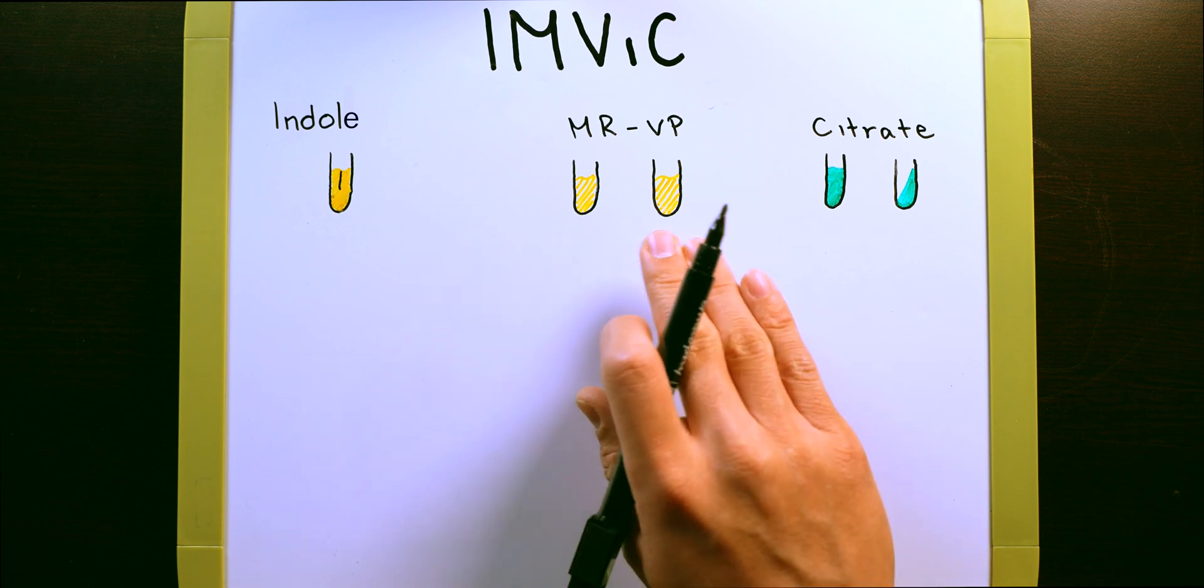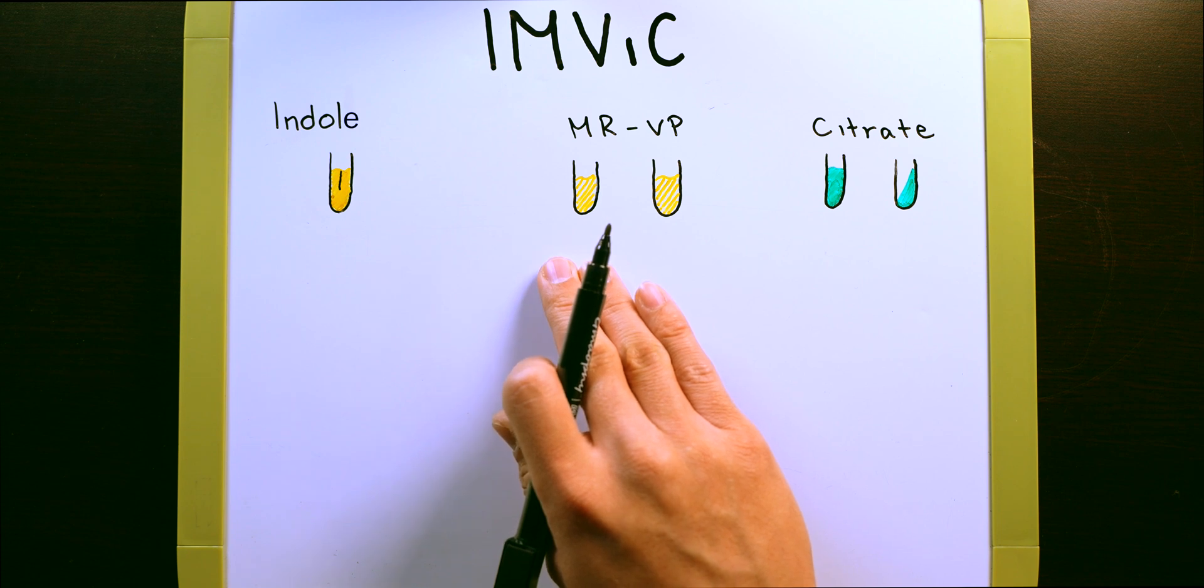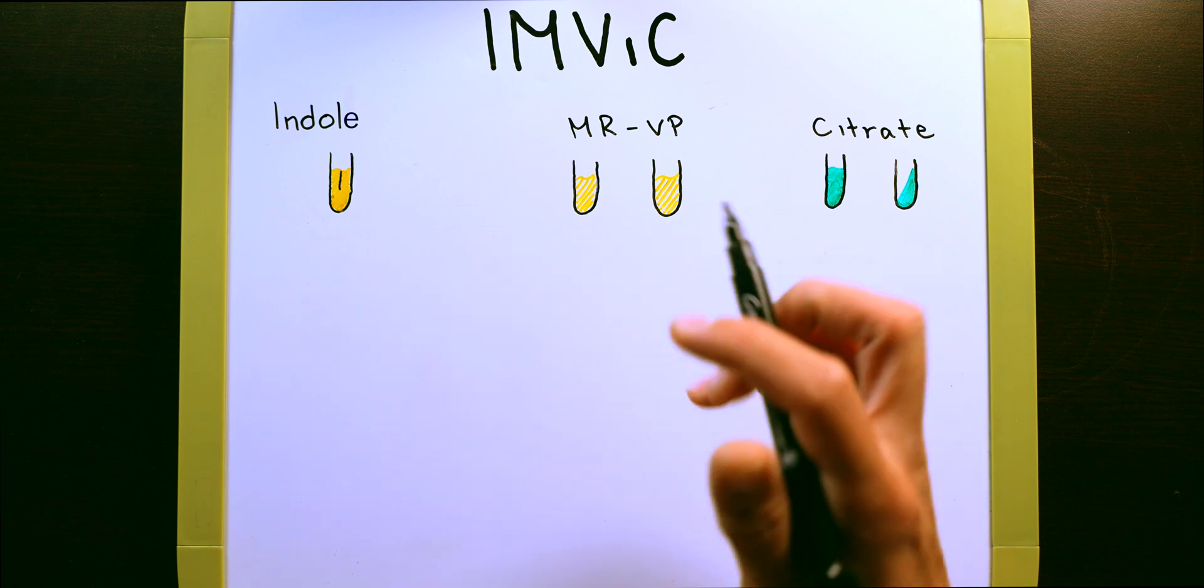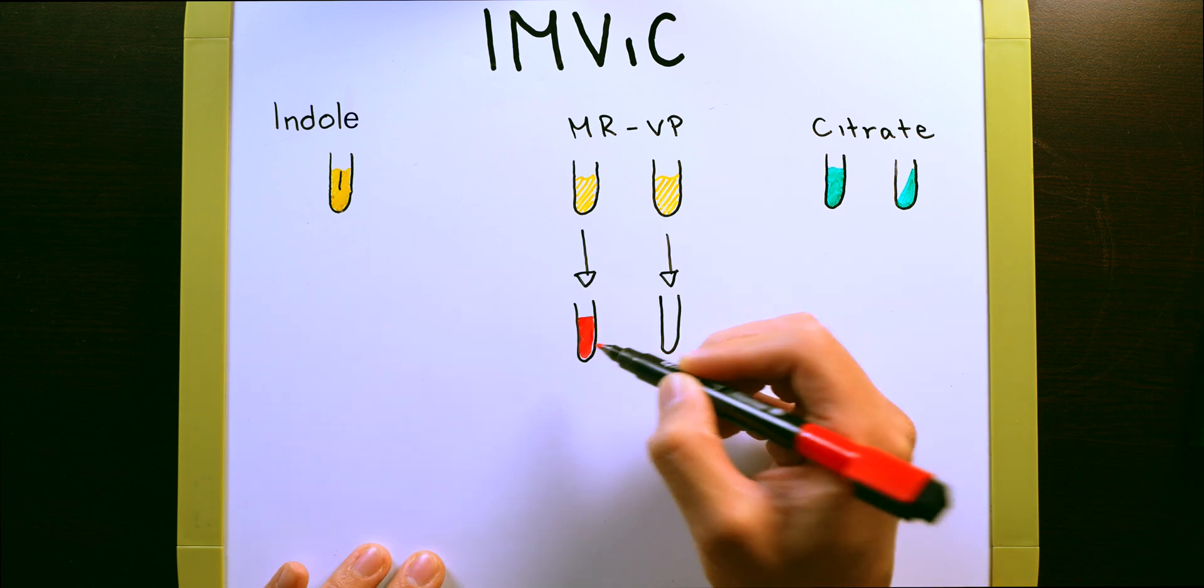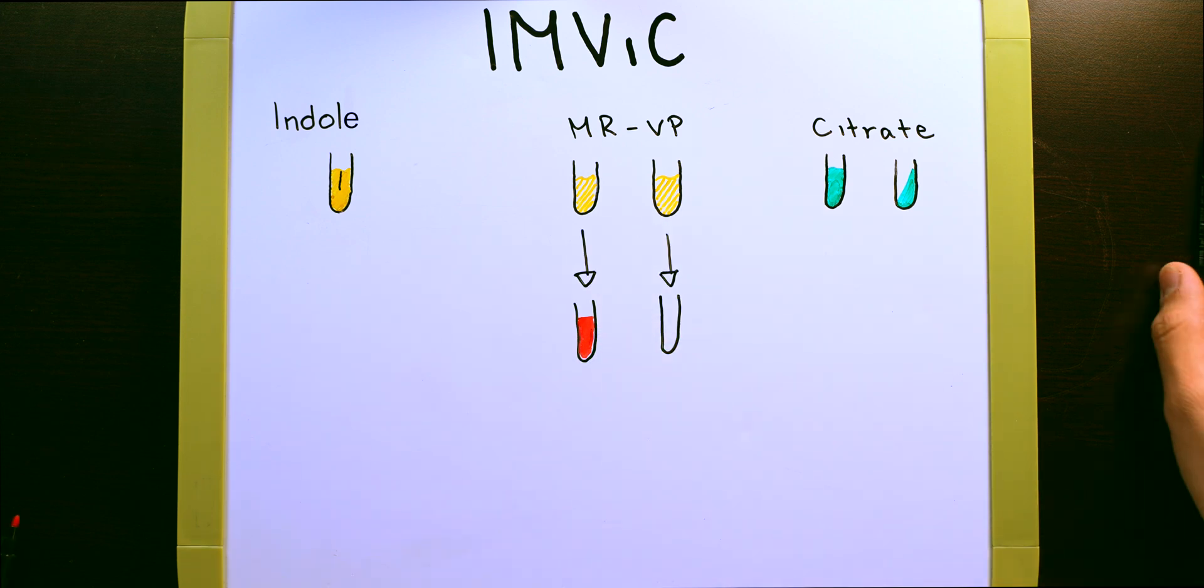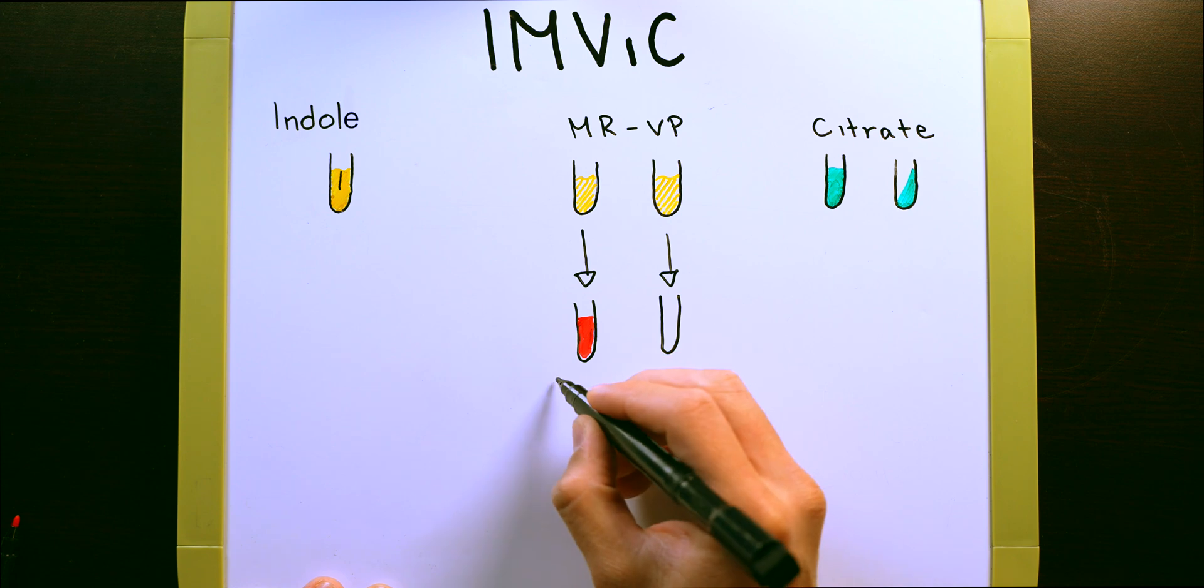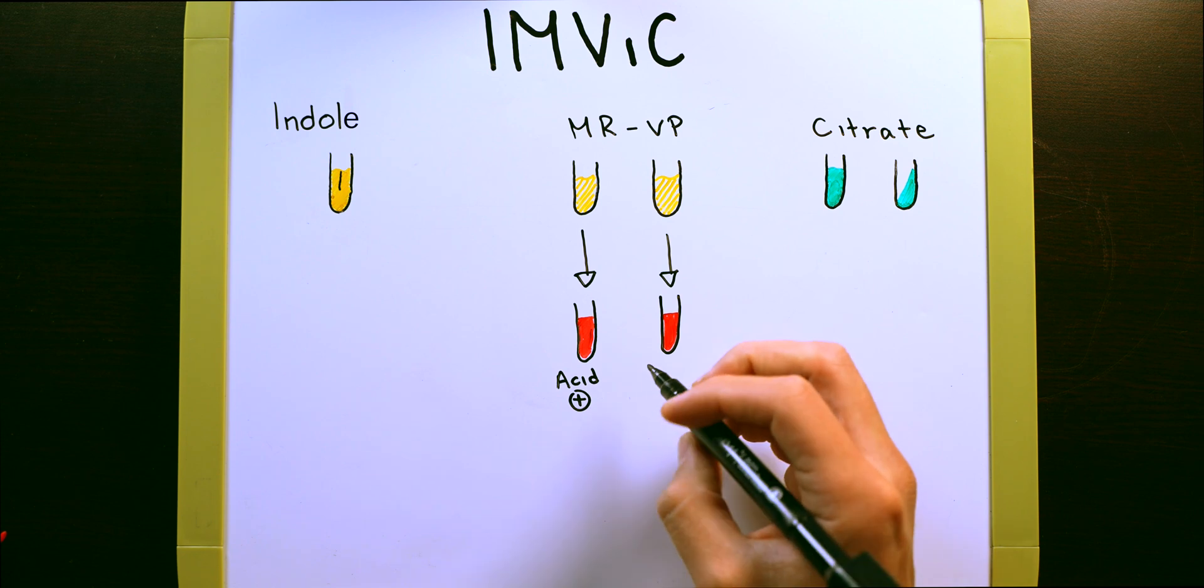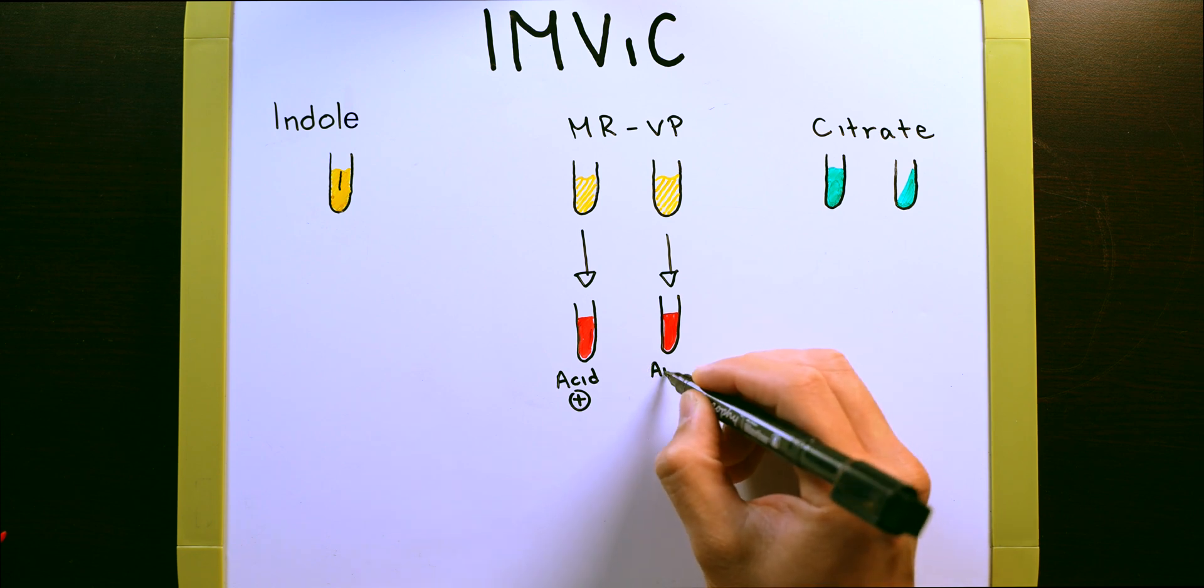The MR-VP test informs you of what happened with that acid. So you'll have two test tubes, add MR reagents to one and VP reagents for the other, and you're going to wait to see if one turns red. If your MR tube comes back and it's red, that means the acid is still present. Or your VP test will come back red, and that means the acid was neutralized.